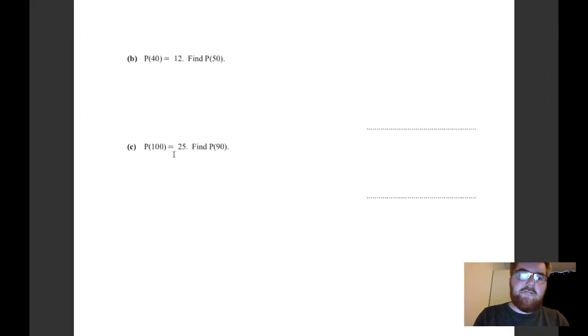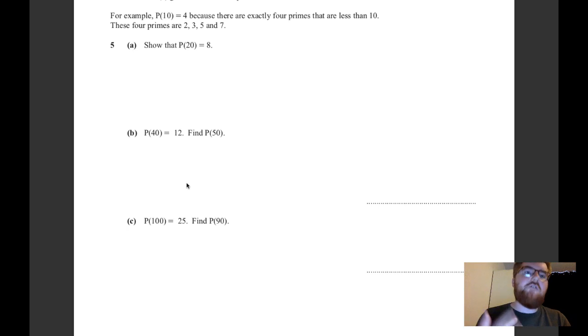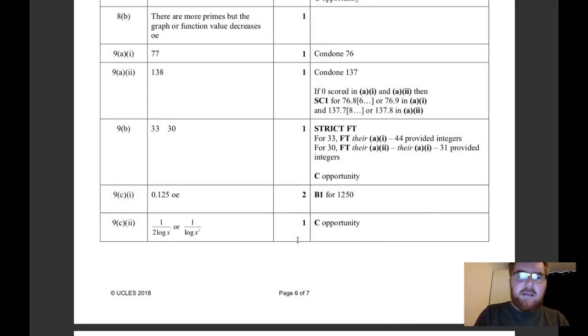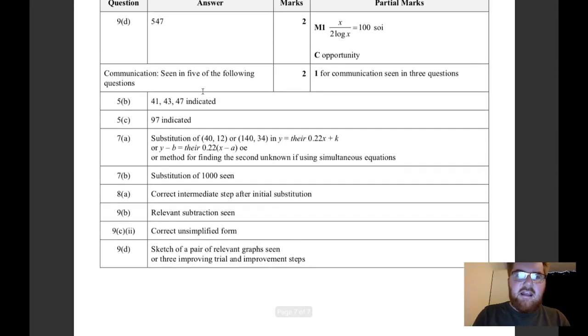For example, 97 comes from finding the difference between P(90) and P(100), and the only difference is that there's this 97 prime number there, with 93 and 91 not being prime. It's just highlighting what you're doing as you're going through it.